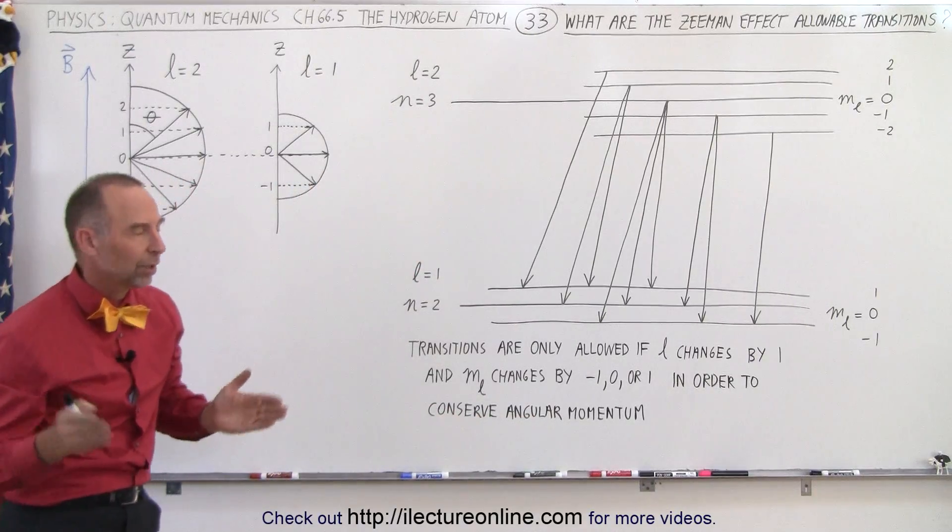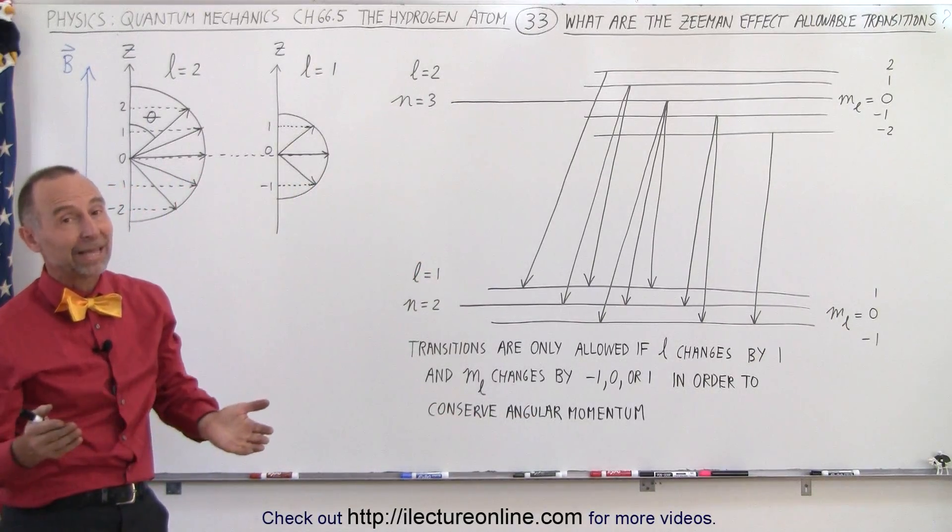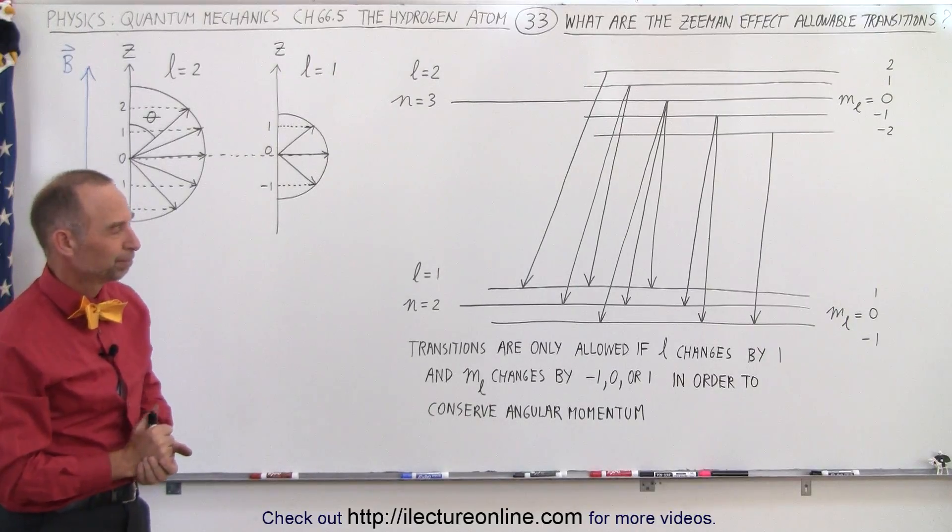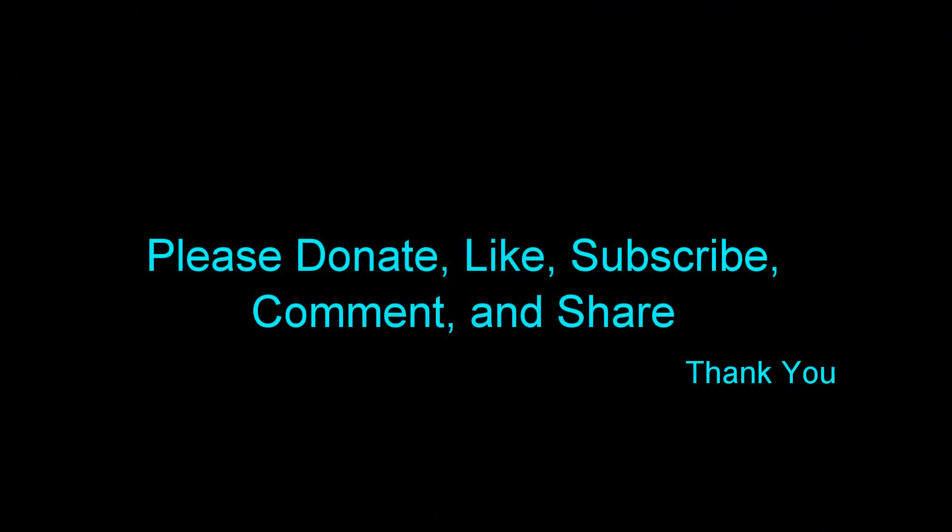because we have to conserve the angular momentum in those jumps, and therefore the jump relationship is limited, and that's how we know.